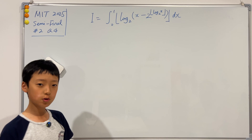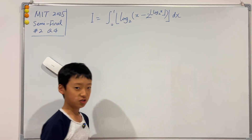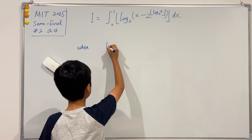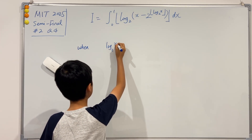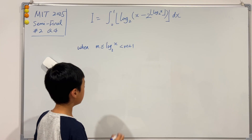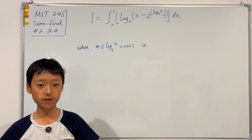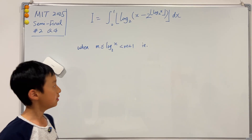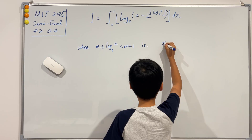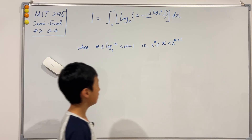If you've watched some of my previous videos, you probably know what to do. We first deal with the innermost log. When the inside of the log is greater than or equal to m and less than m plus 1, then since this is base 2, raising 2 to those powers gives us an expression in x: x is greater than or equal to 2^m and less than 2^(m+1).